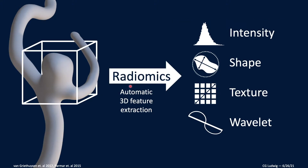Radiomics is a recently introduced automatic image processing tool for pixel-by-pixel, or in the case of a three-dimensional object, voxel-by-voxel extraction of object features. The four types of features that radiomics automatically extracts are listed here on the right: features based on pixel intensity histograms, on the three-dimensional shape of the object, pixel texture matrices, and pixel wavelet transforms.